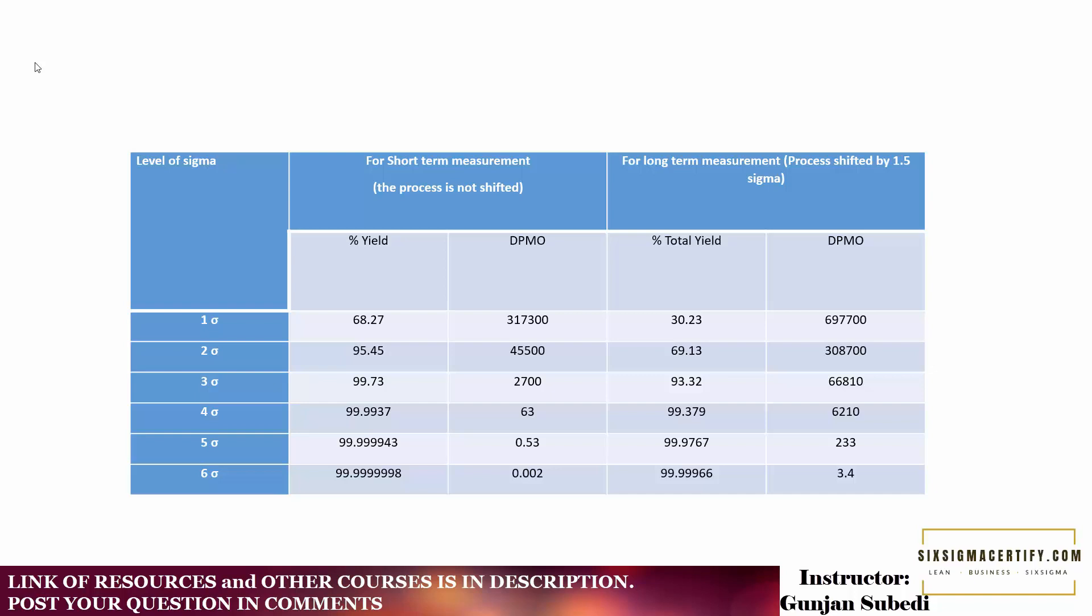When our percentage yield is improved, naturally this is what we really want. We want to improve the yield and we want to reduce the number of defects. Here you can see that there are two tables.